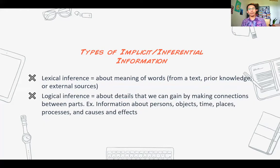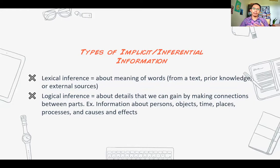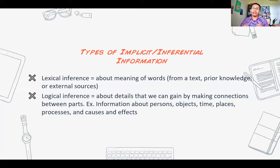The second type is what we call the logical inference. This is information about details that you can gain by making connections between one part of the text and another. Information like this can include details about people, objects, places and time, and even a process or cause and effect. Most of the time you just need to make connections between parts of the text to find the answer.